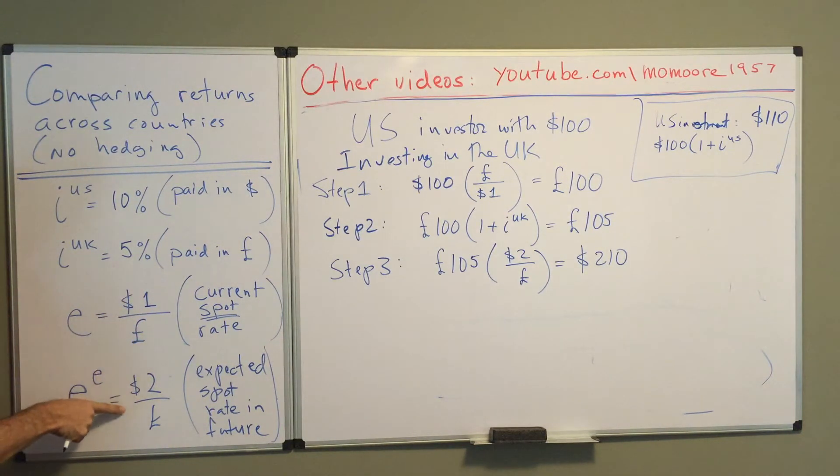These two exchange rates, the current spot rate of one dollar per pound and the expected spot rate of the future of two dollars per pound, represents a massive pound appreciation. Currently, a pound buys $1. In the future, we expect the pound to buy $2.